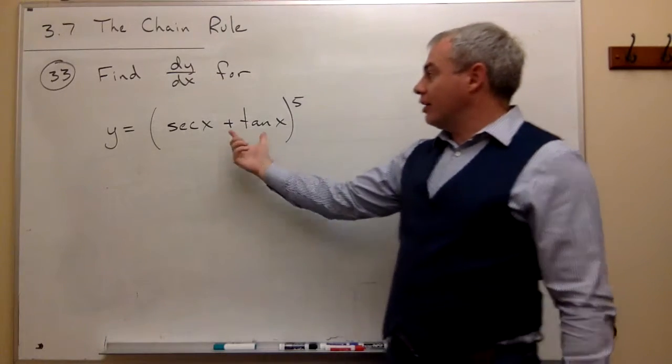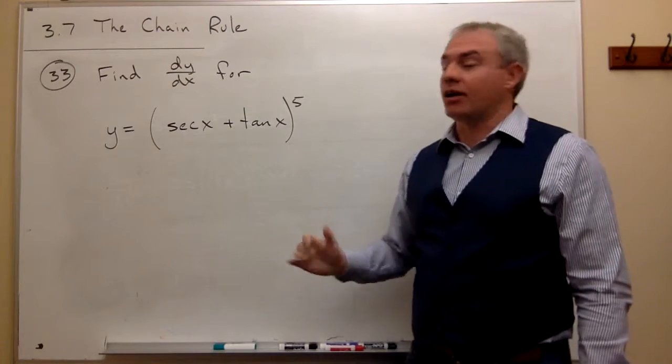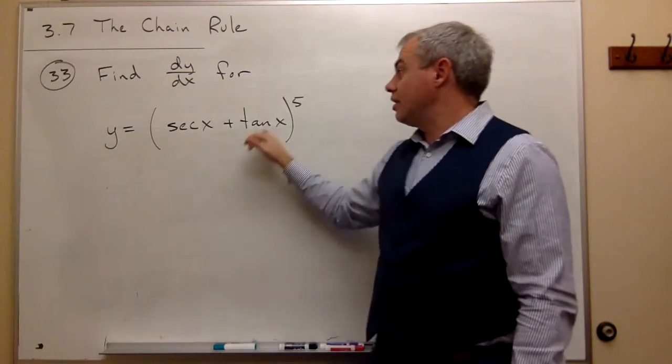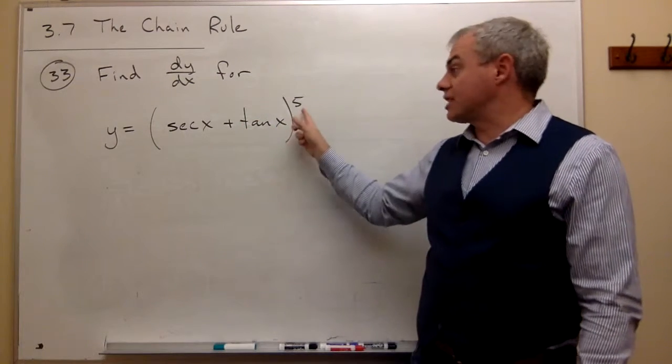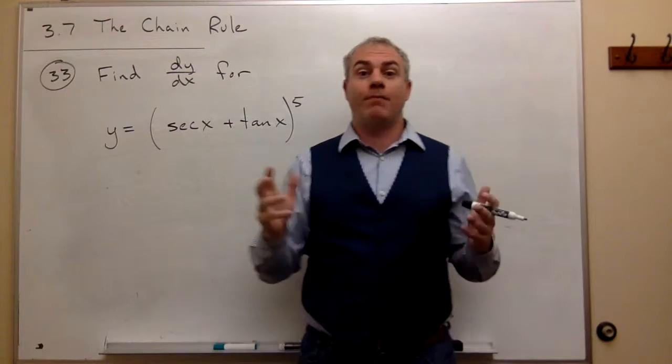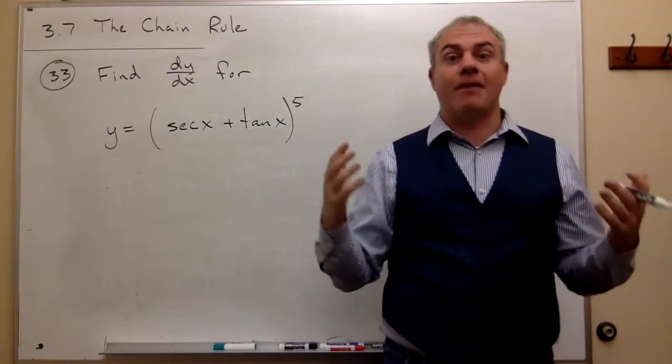If I were entering this thing into my calculator, I'd do secant of x plus tangent of x first. And then the very last thing I would do is I would raise that quantity to the fifth power. So the fifth power is the thing that's happening last.